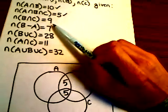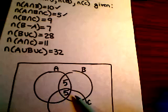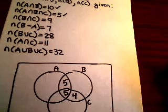All right, I can next use this piece. Number of elements in B intersect C is 9, so the same reasoning. These two regions right here are B intersect C. And I've already got 5, so that means this region right here must be 4.